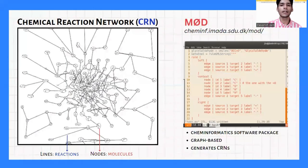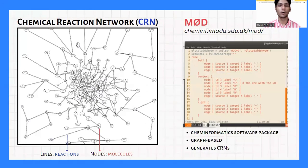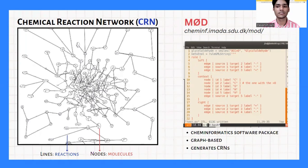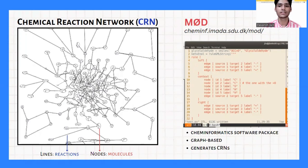The chemical reaction network comprises of nodes — the molecules — and lines — the reactions. We used MOD to generate the CRNs, and it produces a very complex network like this.